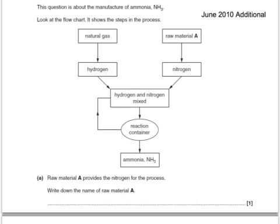Here's another exam question. It shows a flow chart for the manufacture of ammonia and it should be familiar to you by now. Raw material A, which is where the nitrogen is extracted from, would be the air.